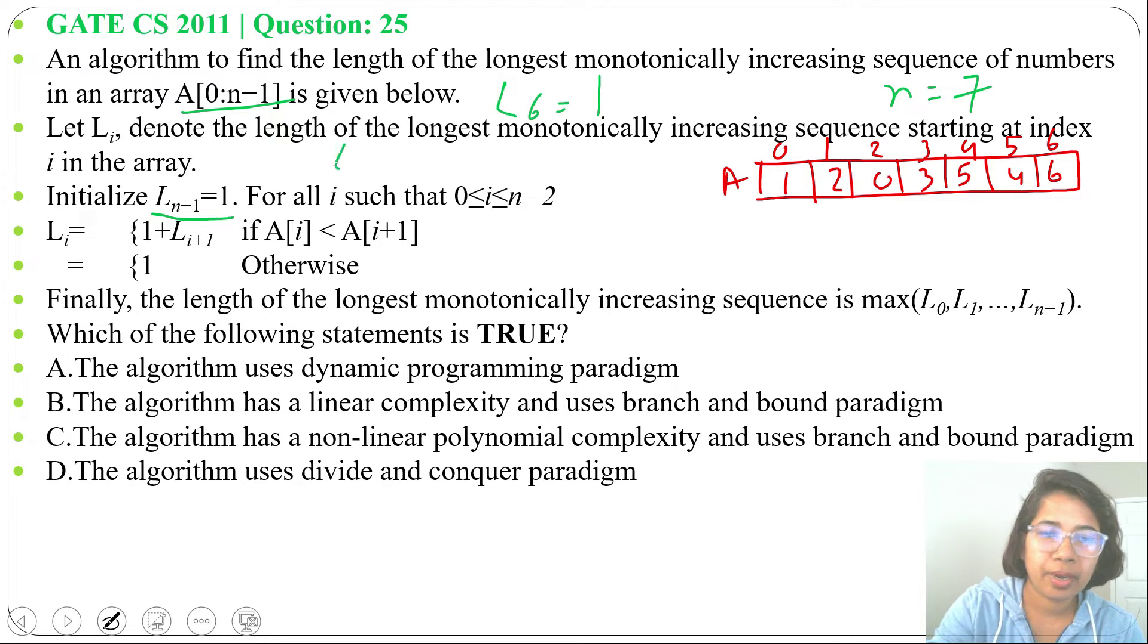Now we will find L_5. For L_5, just check: is A[5] less than A[6]? Is 4 less than 6? Yes, so it will be 1 plus L_6, which is 1, so it will be 1 plus 1 equals 2. Next we will find L_4. For L_4, is 5 less than 4? No, so it will be 1.